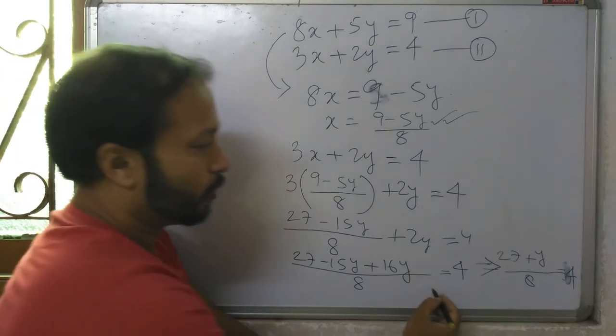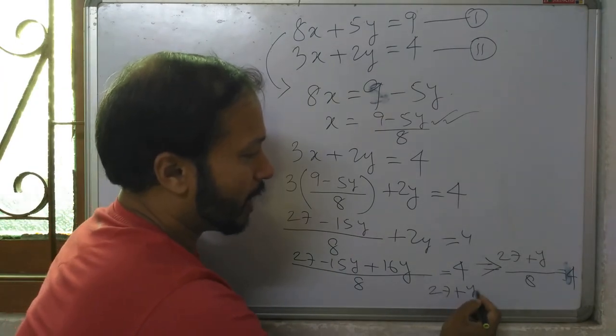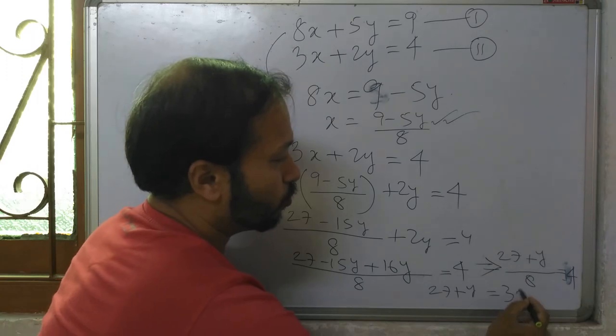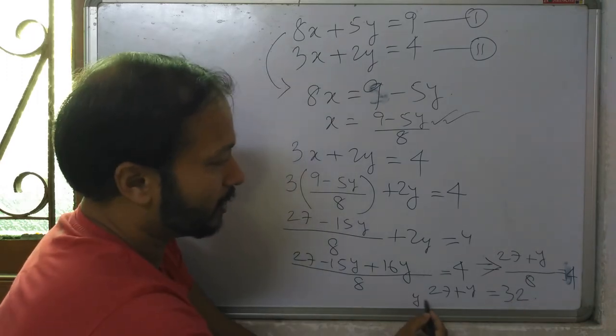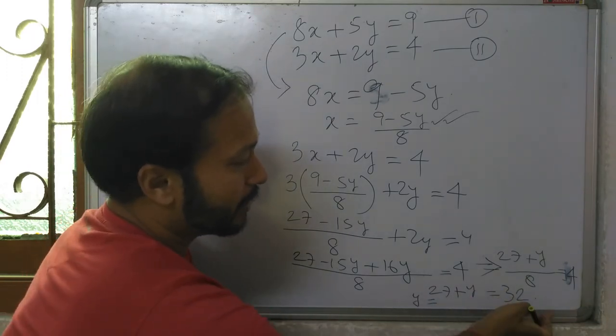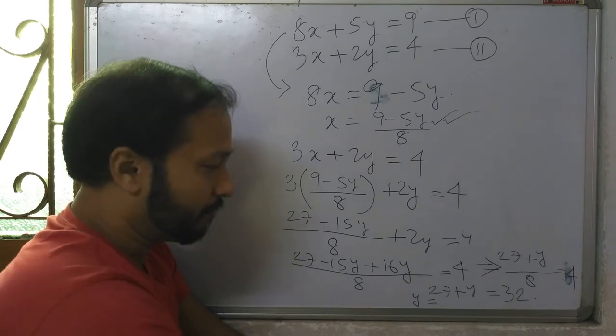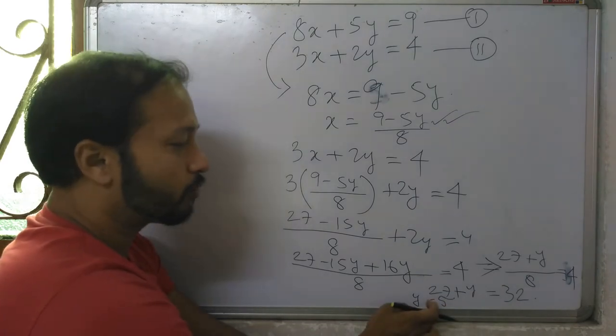Now, if you cross multiply, you get 27 plus y equals 32. So y equals 32 minus 27, that is 5. So we got y equal to 5.